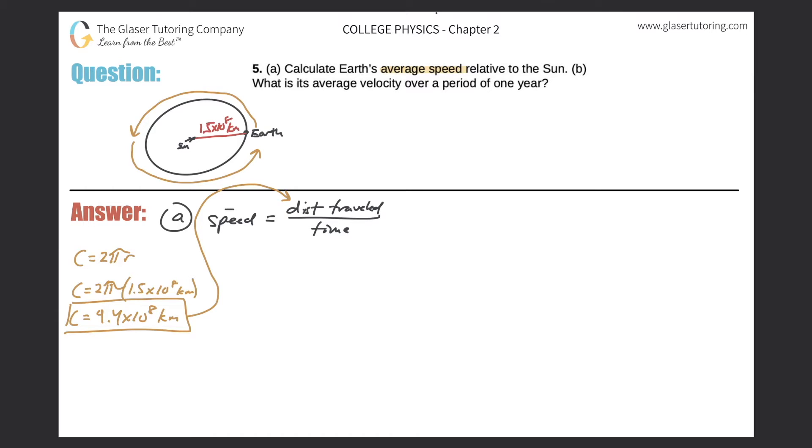Now, how long does it take for the Earth to make its trip around the sun? Well, it takes a year, right? So we know a year to be 365 days. Technically, it's 365 and a quarter, but we're just going to keep it simple here. So now what I'm going to do is plug in and work down. So the distance traveled, I'm going to plug 9.4 times 10 to the 8 kilometers. And I'm going to divide that by one year.